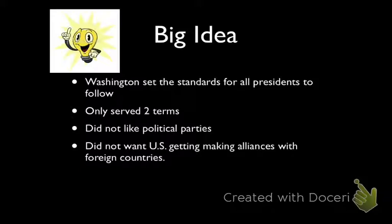Also, George Washington is old — he's in his late 60s, early 70s at this point, and he really doesn't want to continue being president. But I think the most important part was the fact that he didn't want to continue ruling because he didn't want to look like a king.